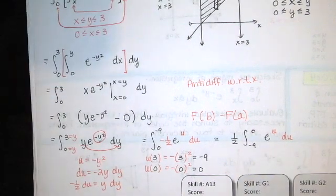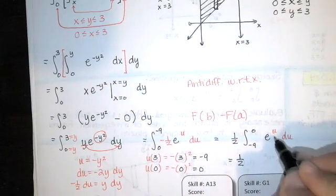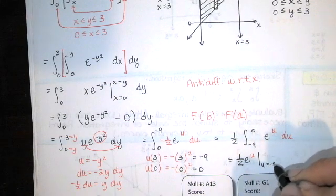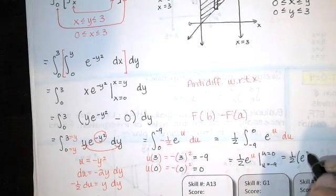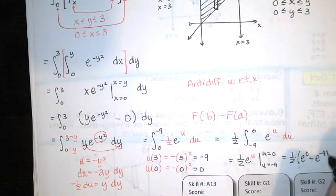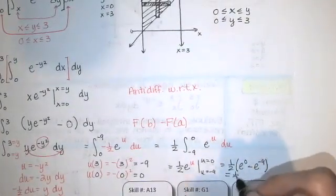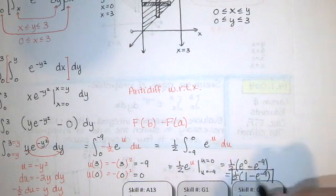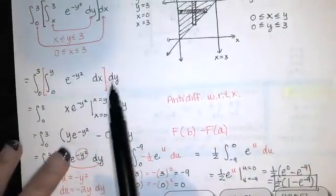Now we are almost done. Bring the ½ down, take the antiderivative of e^u to get e^u, and evaluate at u = 0 and u = -9 and subtract. So we have ½ times (e^0 − e^(-9)), which gives us ½ times (1 − e^(-9)). And that is the value of our integral.